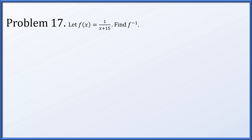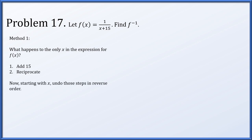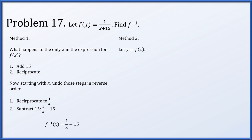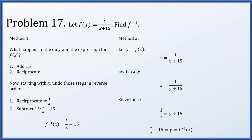Problem 17: find the inverse of f of x equals 1 over x plus 15. Using the reverse-operations method: first 15 is added to x, then it's reciprocated; to invert, reciprocate first giving 1 over x, then subtract 15, giving f inverse of x equals 1 over x minus 15. Confirming with the swap method: set x equals 1 over y plus 15, reciprocate both sides to get 1 over x equals y plus 15, subtract 15, and get the same result.